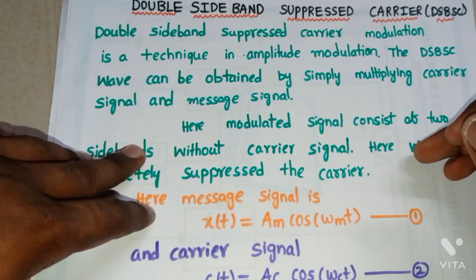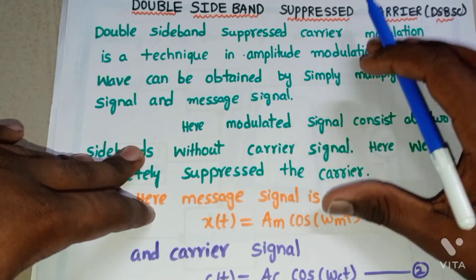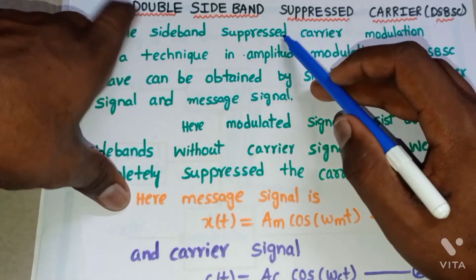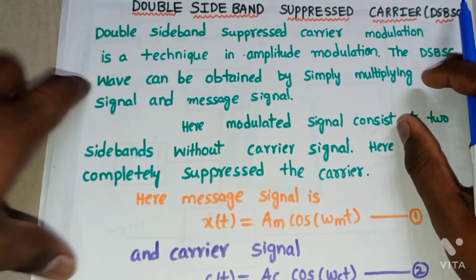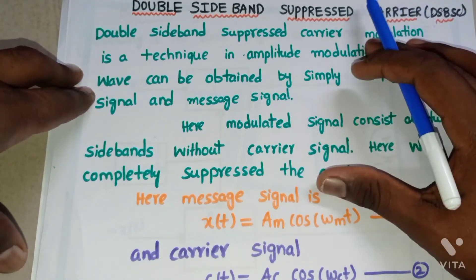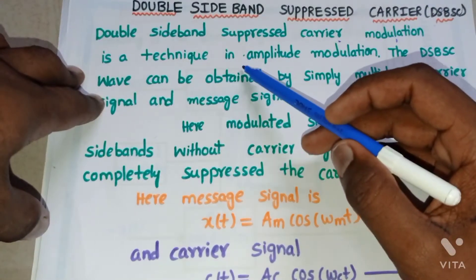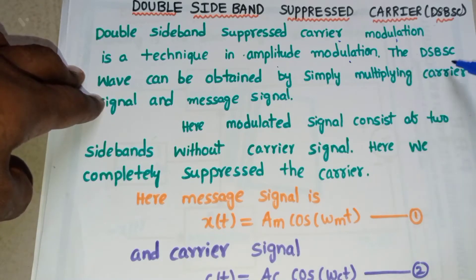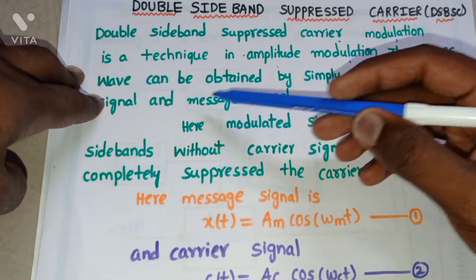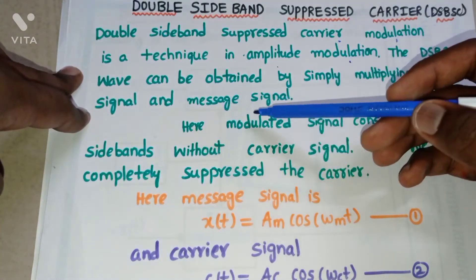Hello friends. In this video we will discuss Double Sideband Suppressed Carrier Amplitude Modulation. This is one type of amplitude modulation, shortly called DSBSC, meaning Double Sideband Suppressed Carrier. DSBSC is a technique in amplitude modulation. The DSBSC wave can be obtained by simply multiplying the carrier signal and the message signal.